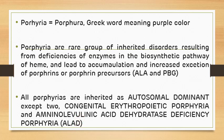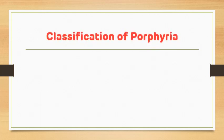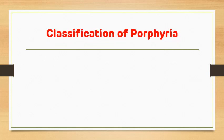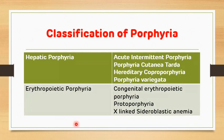Now let's see how porphyrias are classified. Porphyrias are classified into two broad categories: hepatic porphyria and erythropoietic porphyria, depending on the deficiency of enzymes. If enzyme deficiency is in erythropoietic cells of bone marrow, then it is classified as erythropoietic porphyria. If the enzyme is deficient in the hepatic system, then it is classified as hepatic porphyria.